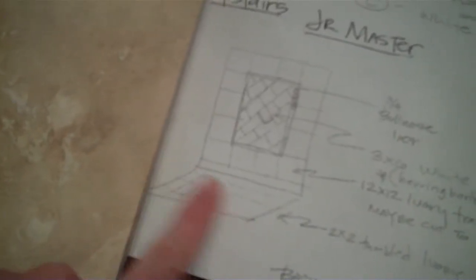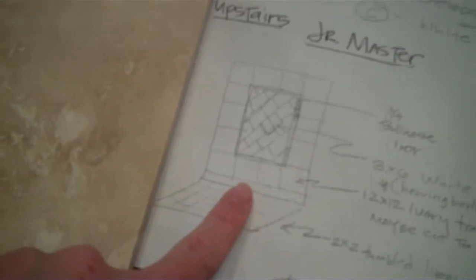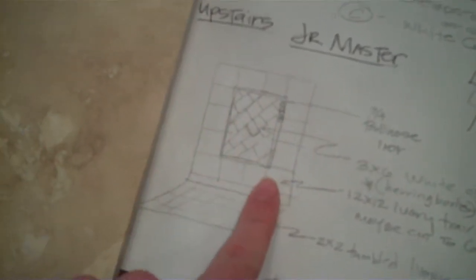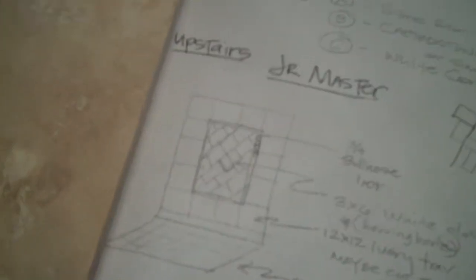We're thinking just a tumbled 2x2 travertine on the floor and then the 12x12s on the wall on the perimeter. Maybe even cut to a 6x12 just to give it a different look. Then in the center,